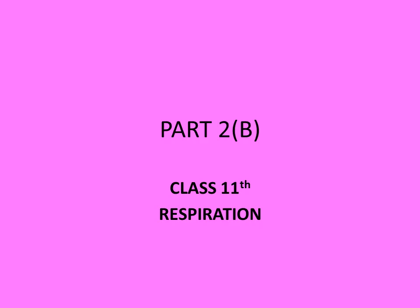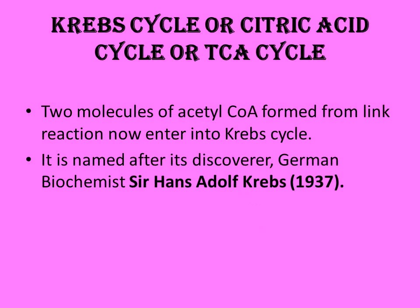The third stage is the citric acid cycle, otherwise called the TCA cycle or Krebs cycle. Three carboxylic acids are formed during this cycle, so it is called TCA — tricarboxylic acid cycle. Citric acid is formed and another citric acid is regenerated. It was discovered by Krebs, so there are three names: Krebs cycle, citric acid cycle, and TCA cycle.